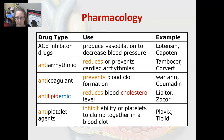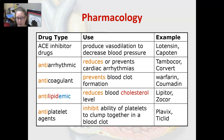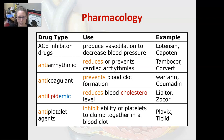Let's look at some pharmacology terms. An ACE inhibitor drug can produce vasodilation to decrease blood pressure. ACE stands for angiotensin-converting enzyme inhibitor. Angiotensin constricts arteries, so the drug inhibits this enzyme from producing the angiotensin that constricts arteries. Some examples are Lotensin and Capoten.